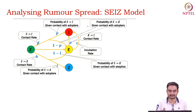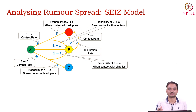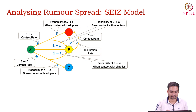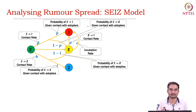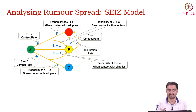Now we will discuss another spread model, but this time on online social networks. We will see how information like rumour or fake news spreads over social media and how we can model it using the same state transition diagram we have discussed. In this rumour spread model, based on a paper published around 2013-2014, the authors tried to understand how rumour spreads on online social networks and came up with four states.